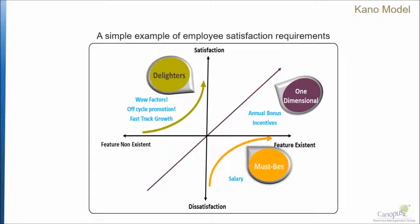The Kano model serves handy for this purpose. If you recollect, we talked about three different groups for bucketing the needs of customers: must-be — in other words, mandatory stuff; delighters — things that would delight the customer; and one-dimensional factors. It would be helpful if you can go back to the basic course, recap a little bit about the Kano model, and then proceed forward.